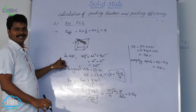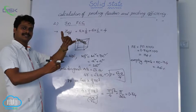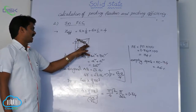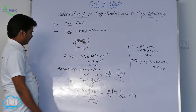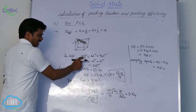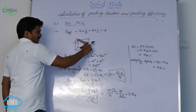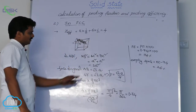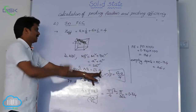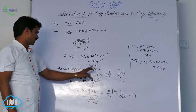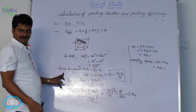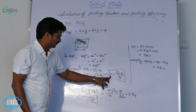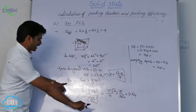Let me recap how to calculate packing efficiency in FCC. Z effective equals 4. In FCC, atoms along the face diagonal are in contact with each other. Face diagonal AB with BC and AC makes a right angle triangle. For that right angle triangle: AB square equals AC square plus BC square. AC is edge length A and BC is also edge length A, giving 2A square. So AB equals root 2A — the face diagonal. From that, 4R equals root 2A, giving us the relation between edge length and radius.